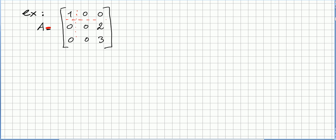We can partition this way and this way. So if we partition this way, we have a block diagonal matrix, because this is a one by one block, this is a two by two block, and all the other blocks are zero. So this is clearly a block diagonal matrix. Very easy example.